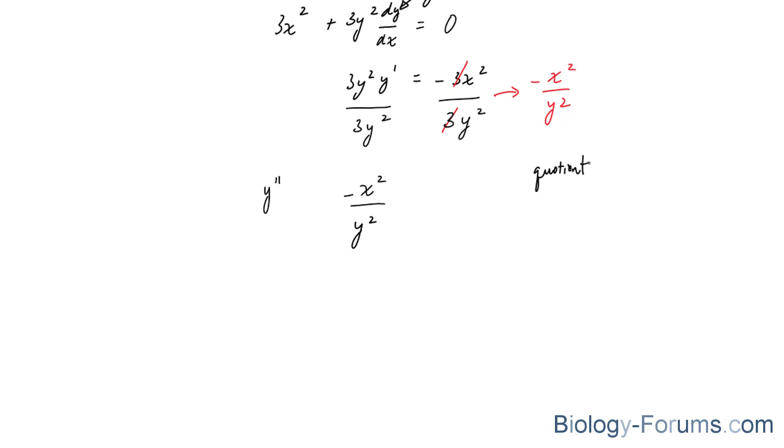the quotient rule uses this pattern. Let's say we have two functions, f and g. You multiply g by the derivative of f, and then you subtract the derivative of g, multiplied to the function f over g to the power of 2.